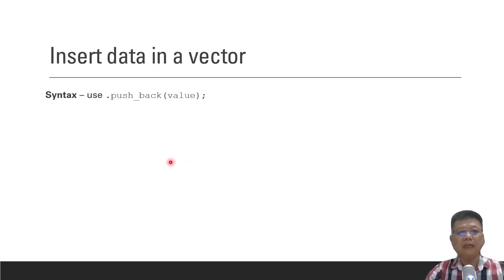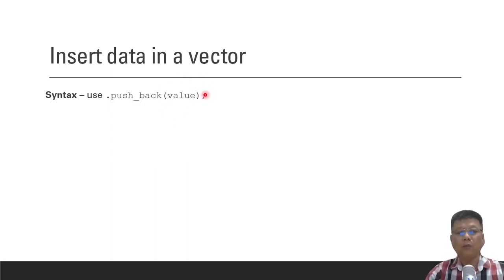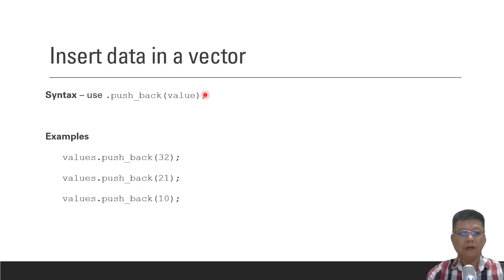In order to insert data in a vector, we always use .push_back, followed by the values from the user or values you preset. For example, we can set a variable name .push_back and then the value 32.